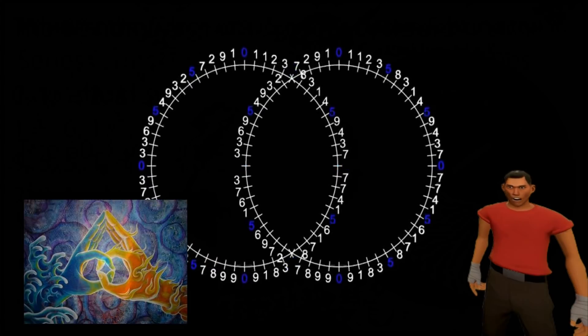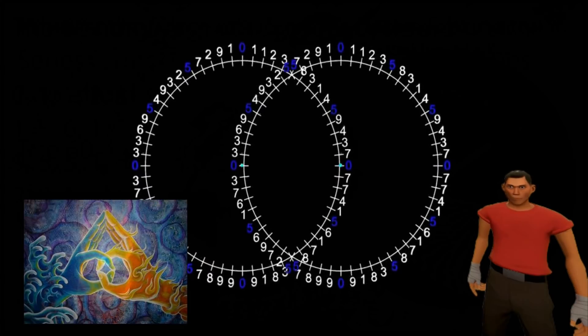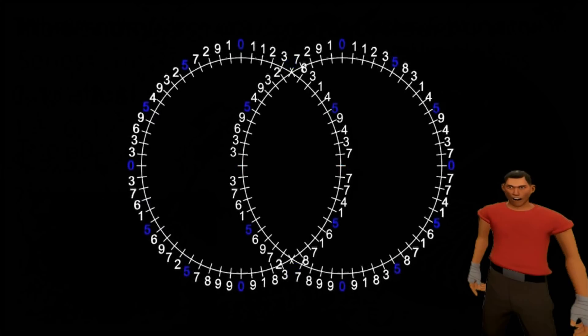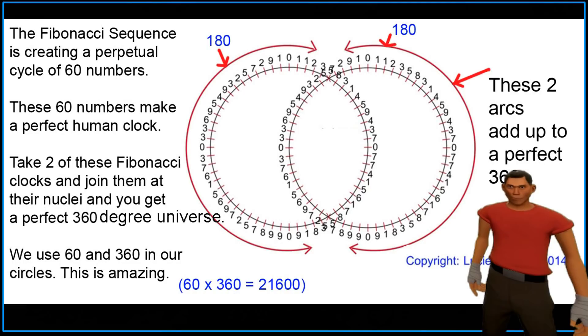As soon as I connect two of these circles of time together, I start to generate the number 360. We use 60 units in our clocks and 360 degrees on a compass. I was stunned. The Fibonacci sequence was not only creating 60 units of time, but it was also generating the 360 degrees we use in our physical universe.